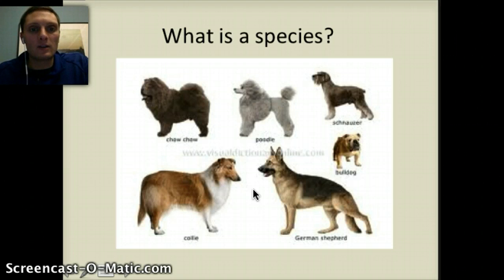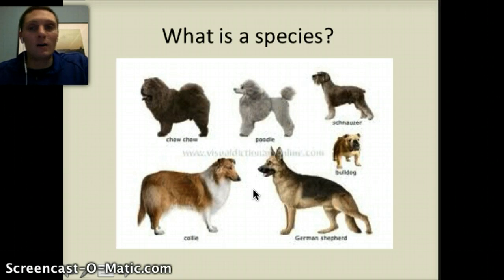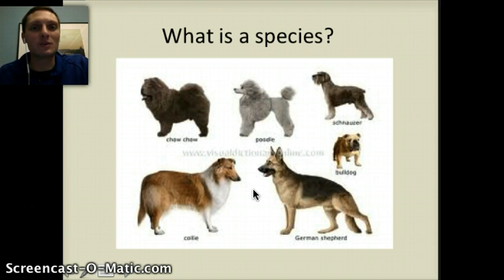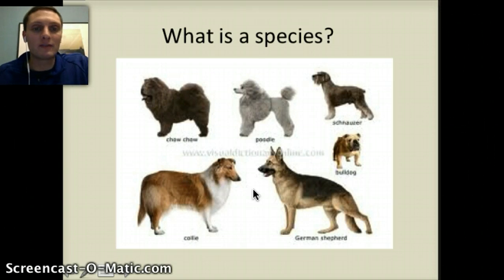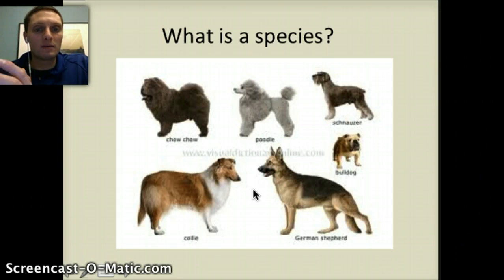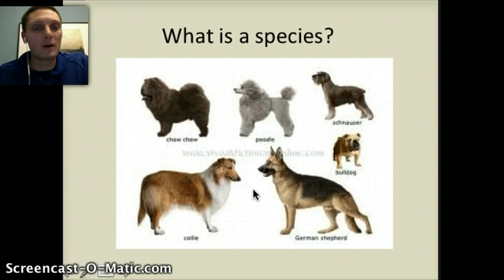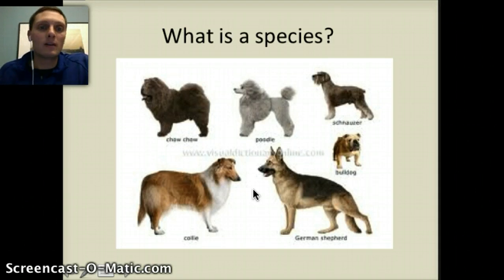If you think of a large dog like a really large German Shepherd breeding with a Chihuahua or Pomeranian, the physical aspect of this occurring is probably going to be pretty difficult. That is actually one barrier to eventually producing two different species: the inability to reproduce physically. Now, if sperm and egg were extracted from both and mixed in a lab, yes, they could produce fertile offspring — but naturally, a big German Shepherd reproducing with a little Chihuahua is probably not going to happen. Because different dog breeds can still reproduce, they're not technically different species.